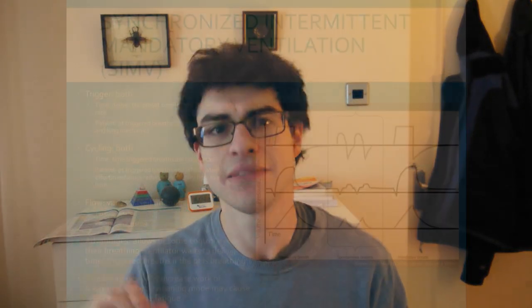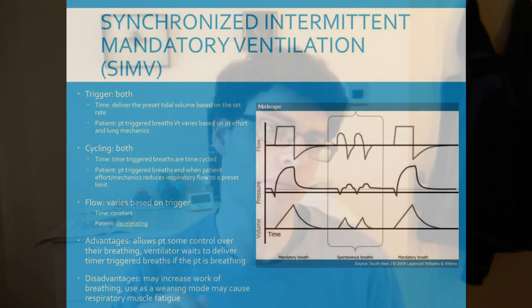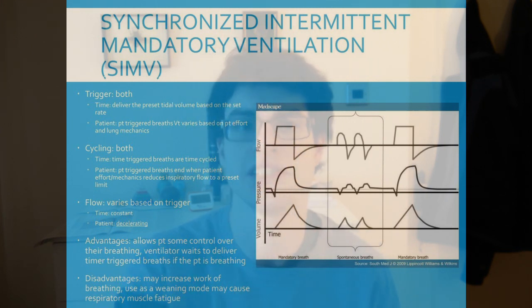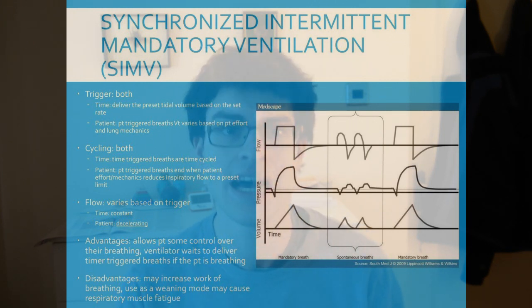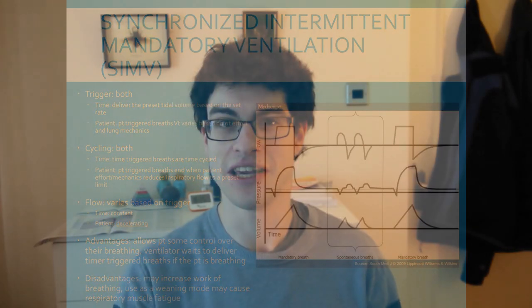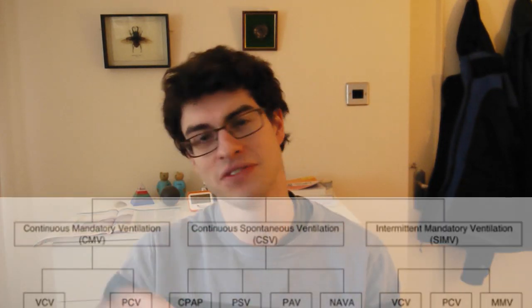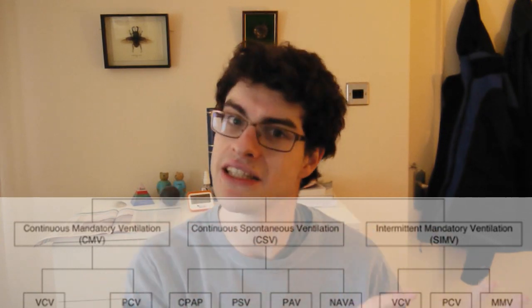Halfway between the two is SIMV — Synchronous Intermittent Mandatory Ventilation. This is where you let the patient breathe themselves while you help them by pushing some air into their lungs if you detect that they're breathing. But you also mandate a certain number of breaths per minute — if the patient doesn't achieve that themselves, you make them breathe. It's a more forgiving version of CMV, but still more controlled than PSV.